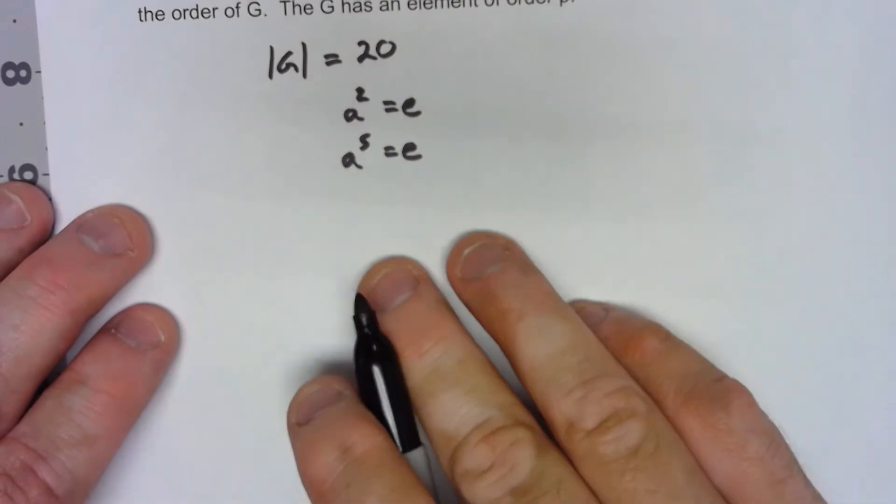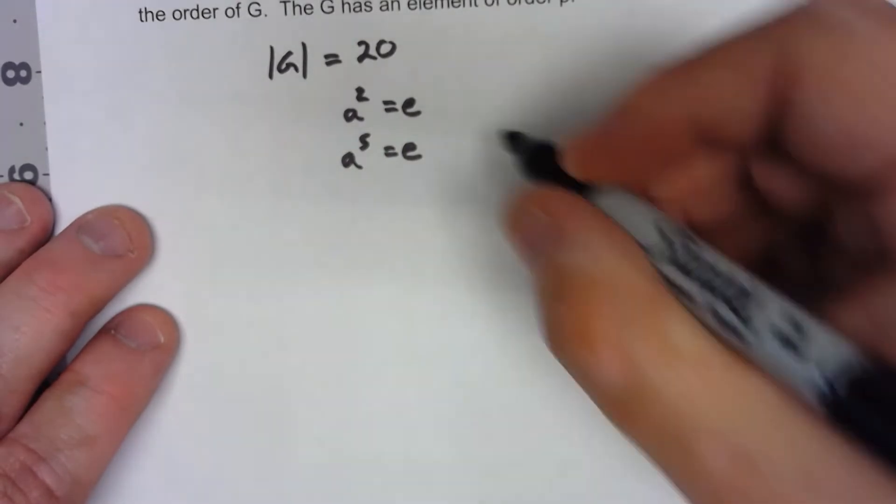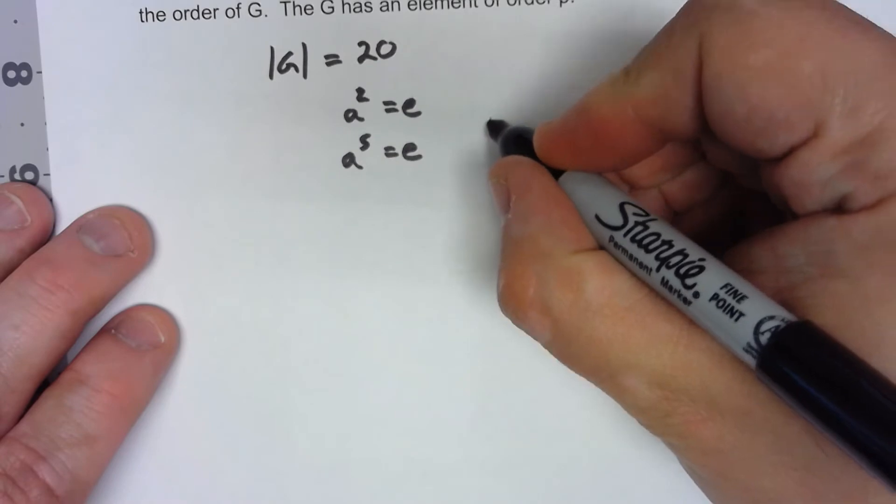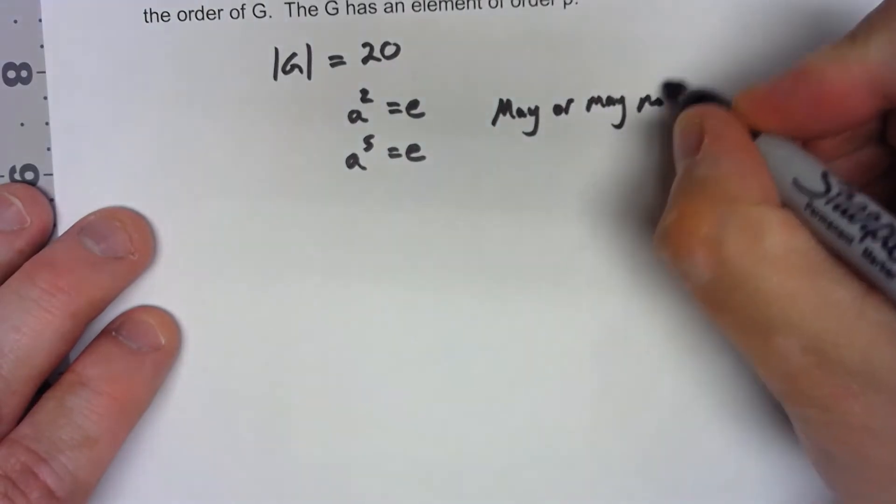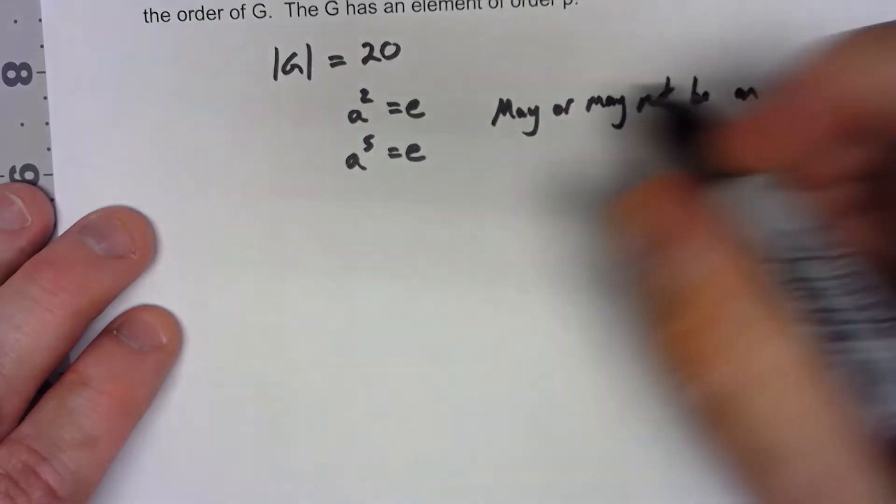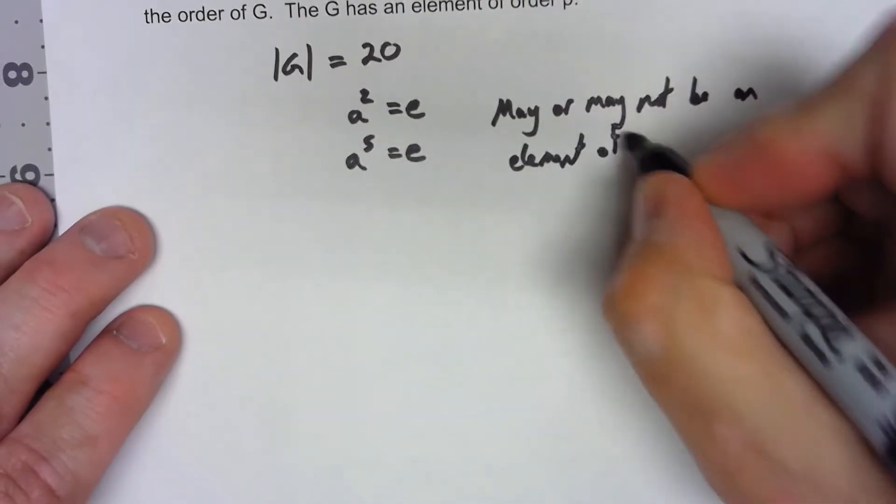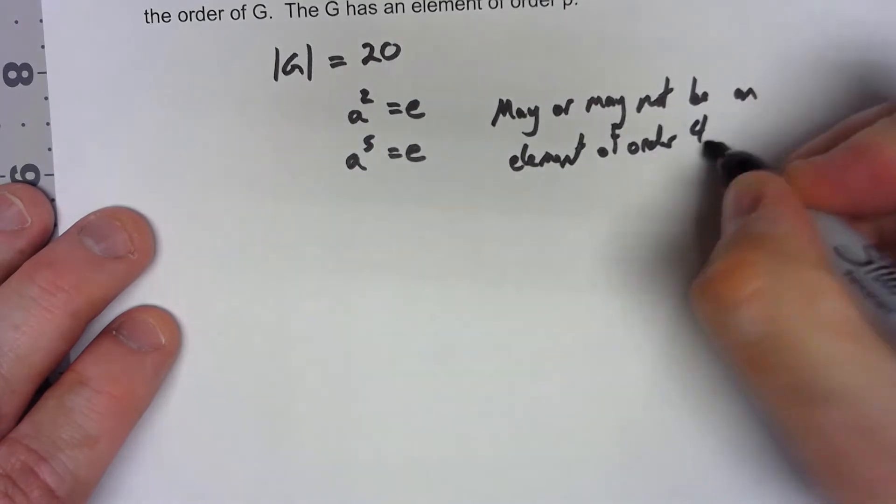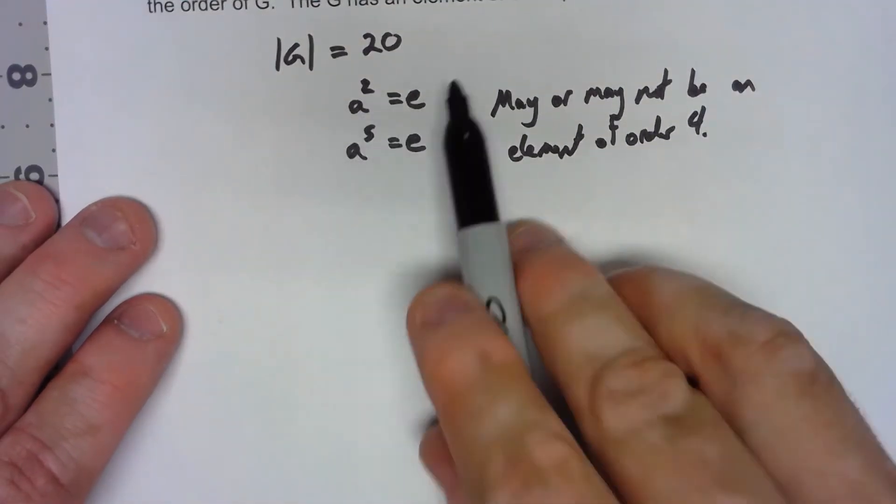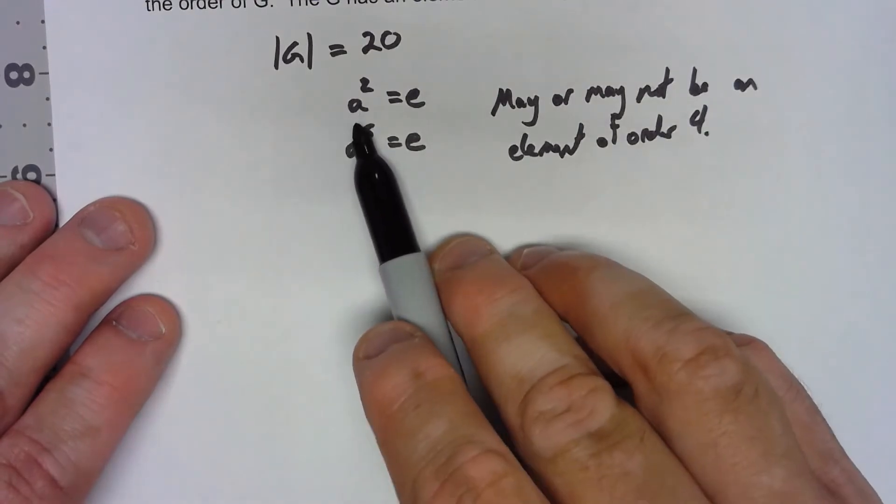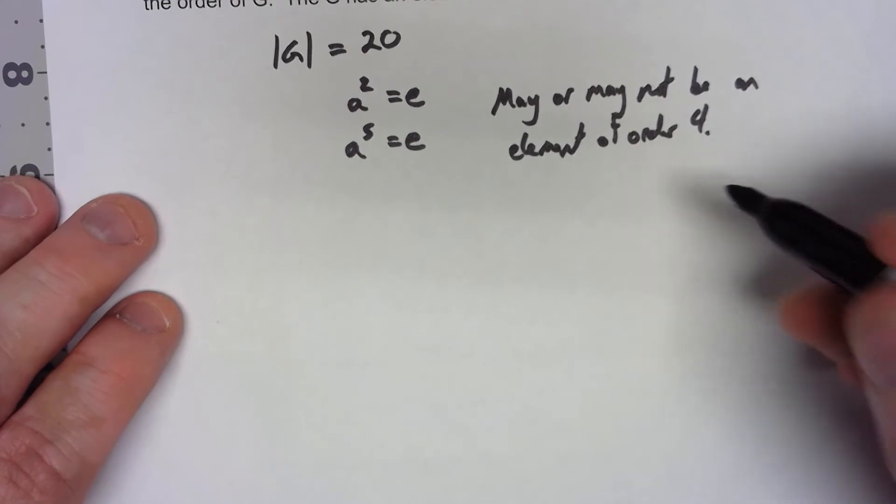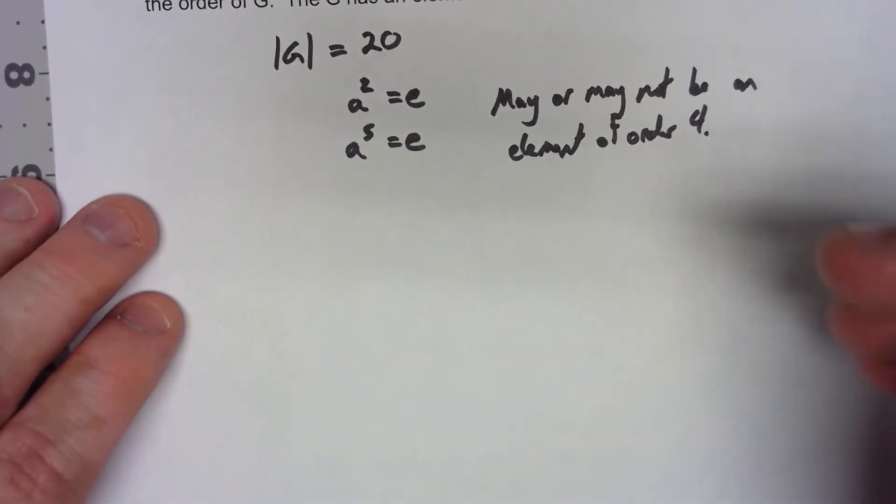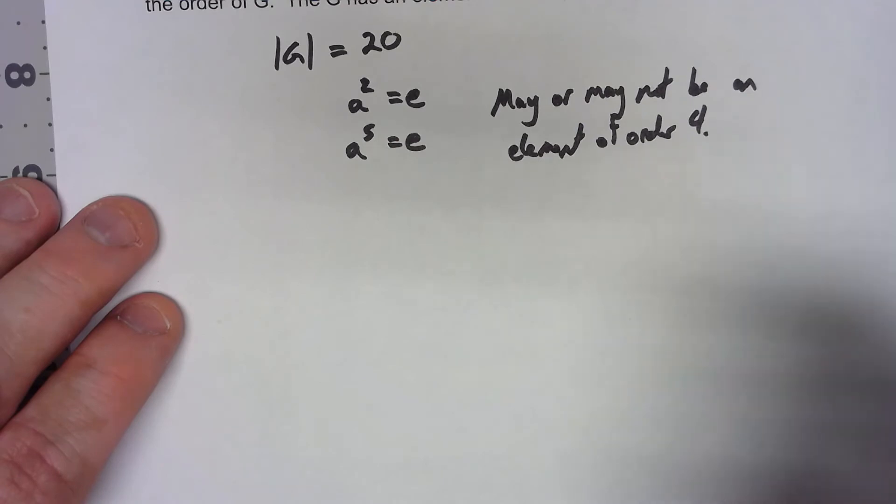However, that doesn't mean that we've got an element of order 4. There may or may not be an element of order 4. I don't want to write it as A to the 4 equals E. We know that has to be true because if you've got an order 2 element, you've got something with A to the fourth equal to E. But we don't know if we've got an element that the fourth power is the lowest power that gives us the identity.